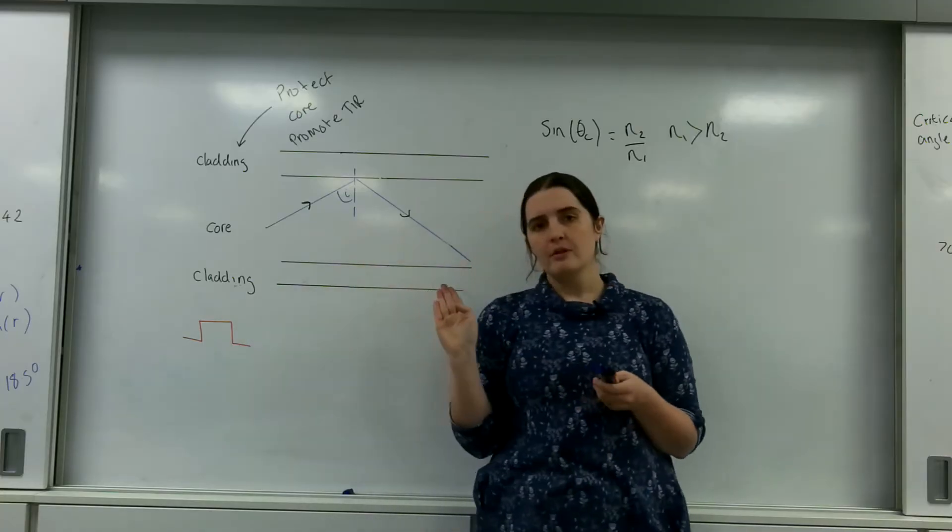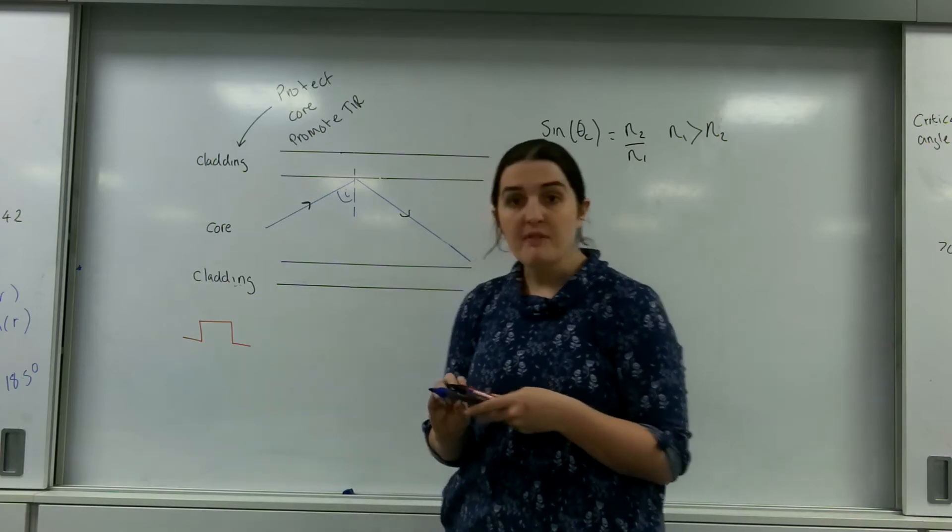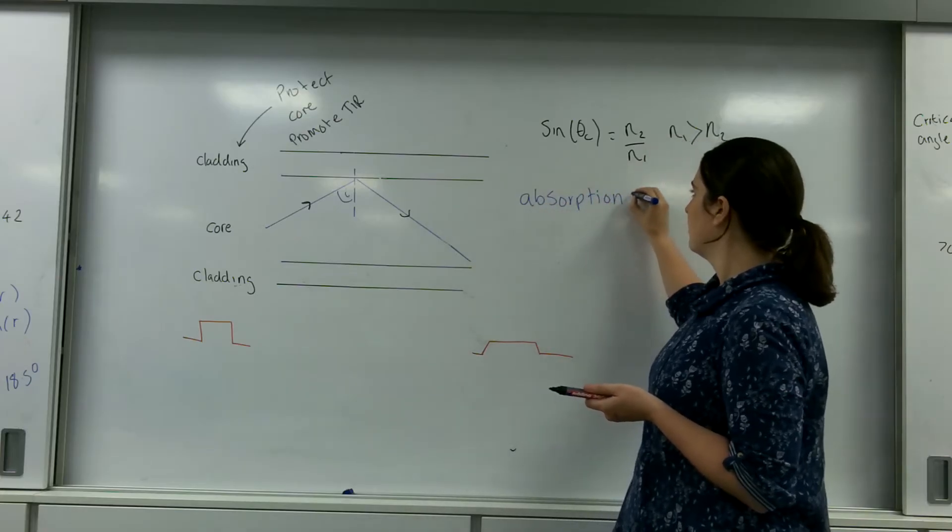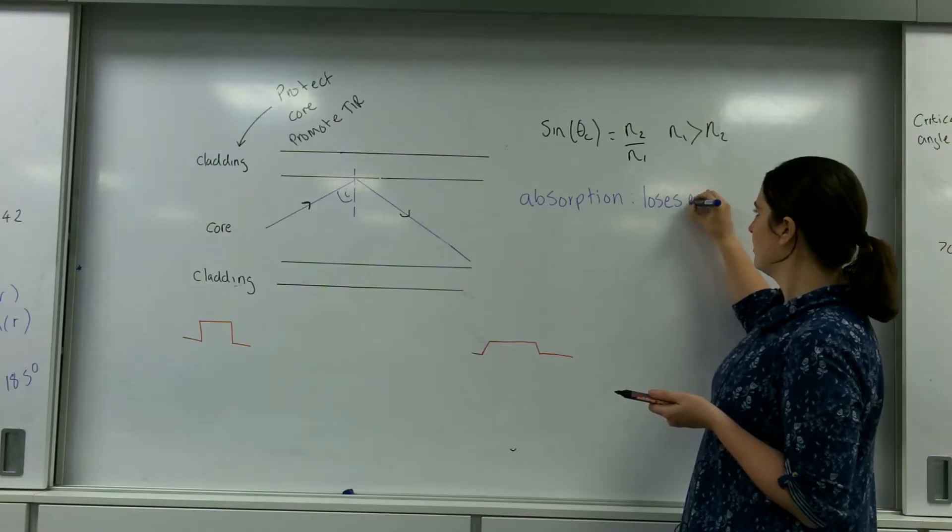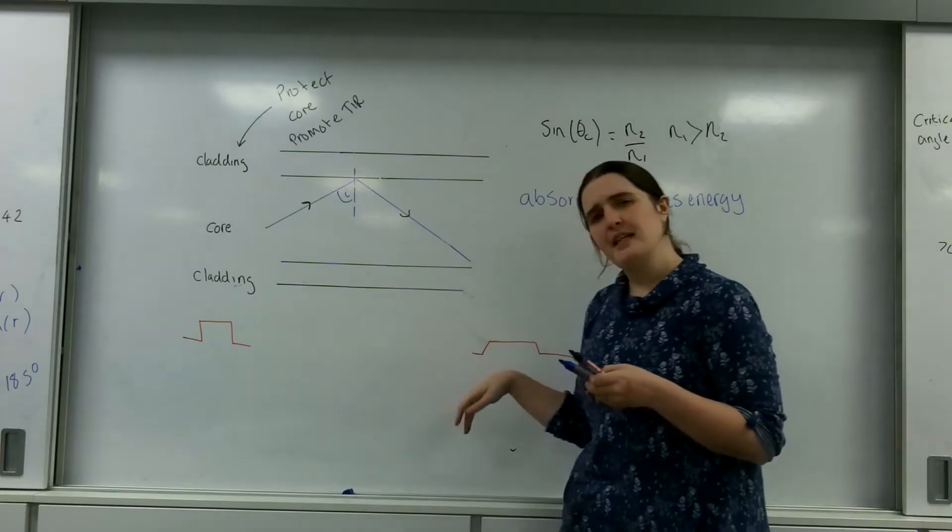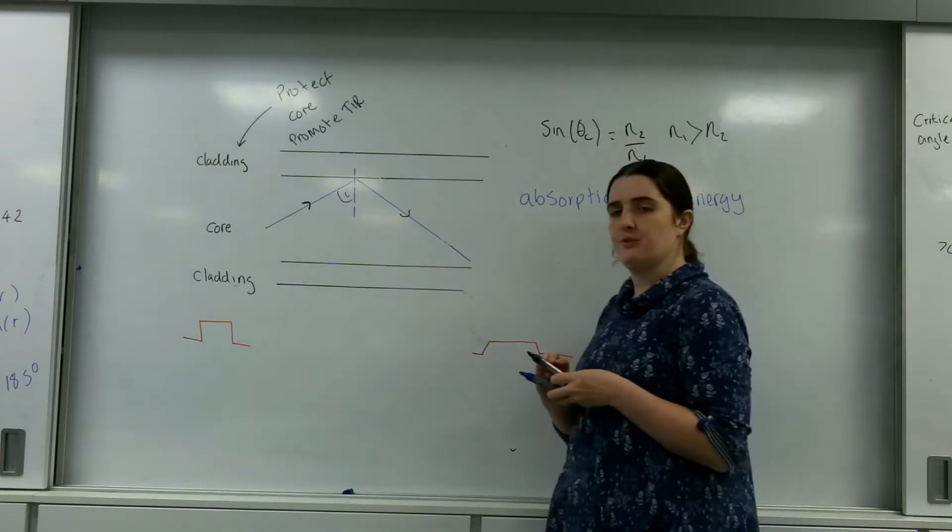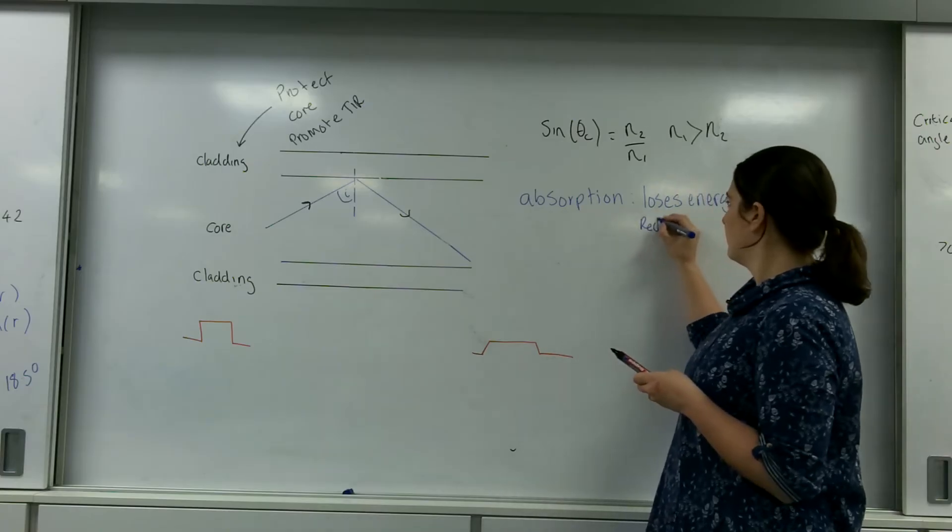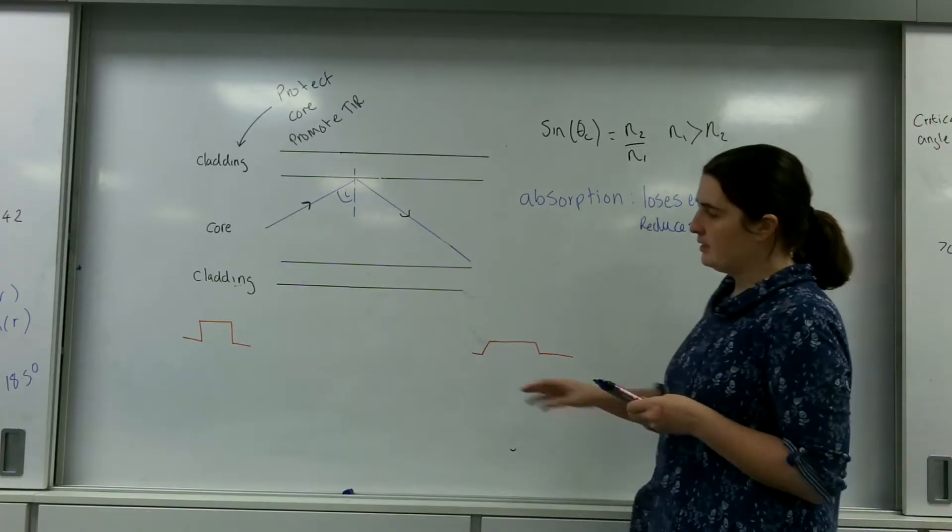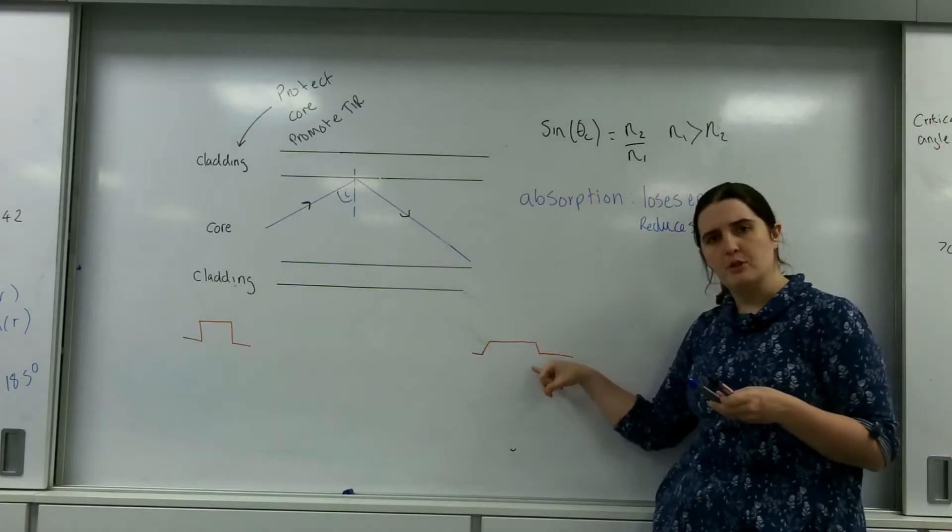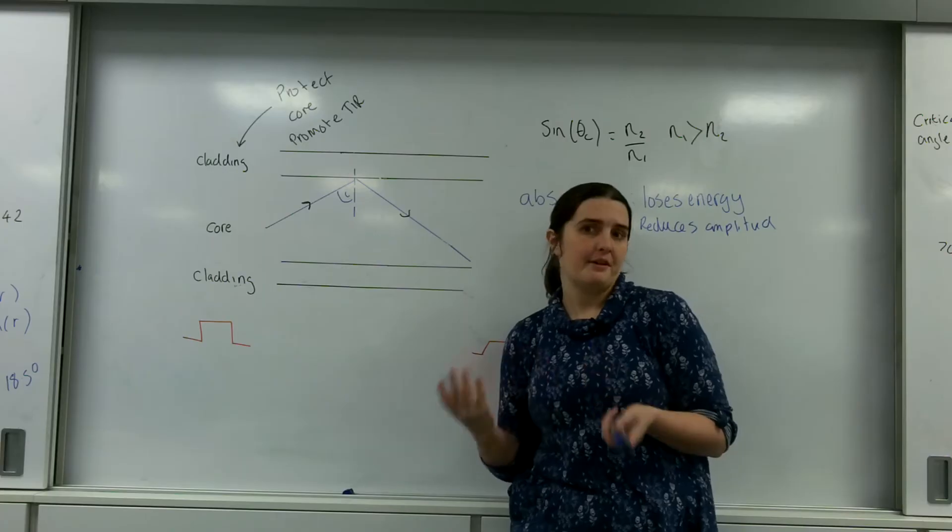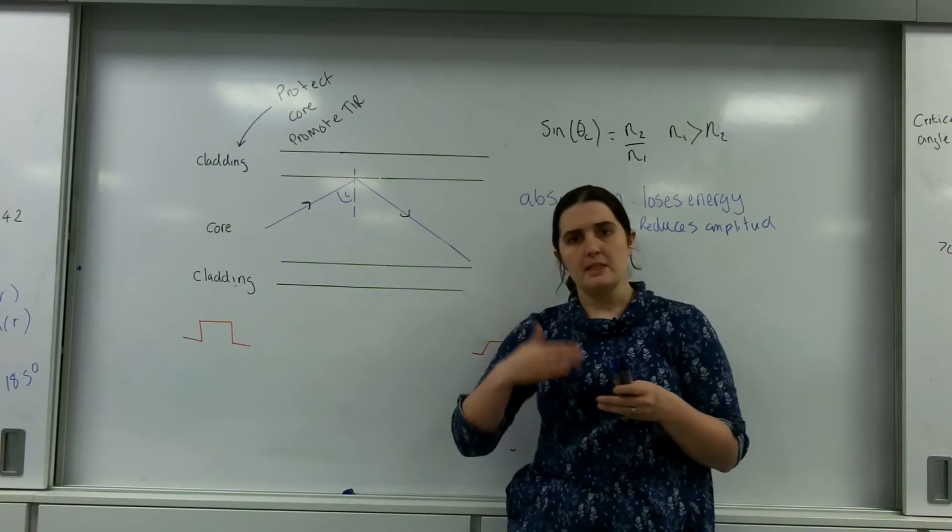As it goes through, you lose energy. Some of it may leave and we call this absorption. And how this affects the signal is it reduces the amplitude of the signal. Okay, so you have this signal input and the output is much lower. This means that your signal over a long distance can deteriorate over time. So there are normally signal boosters along the way.